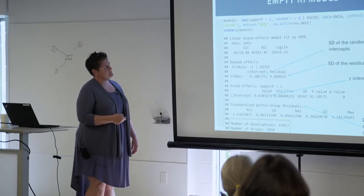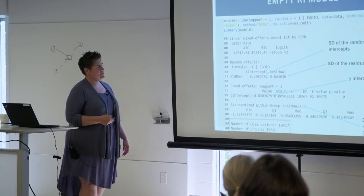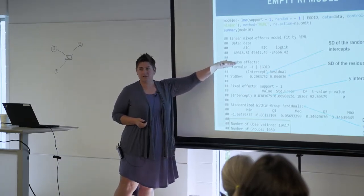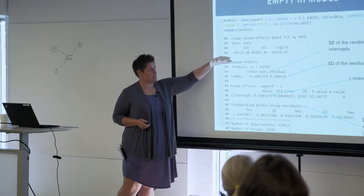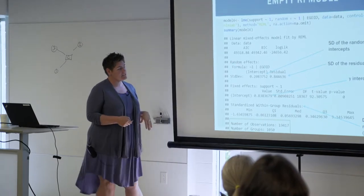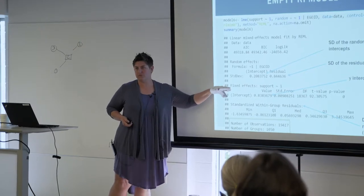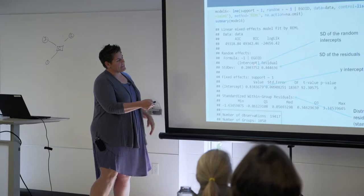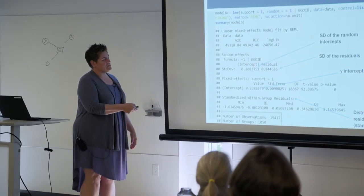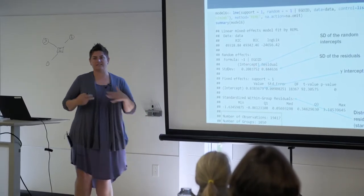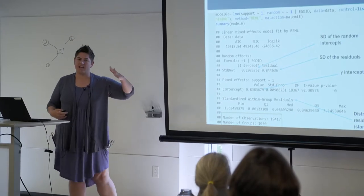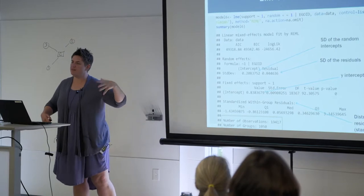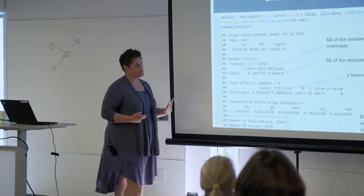So here's your output. It outputs AIC and BIC, log likelihood. You're going to see different parts of the model: the random effects, which in this case is just the random intercept, and then the fixed effects — the betas we're all used to interpreting. Right here we have the standard deviation of the random intercepts. This basically tells us how far apart people are on average. If the standard deviation is big, the random intercepts are very different. If it's small, not so much.